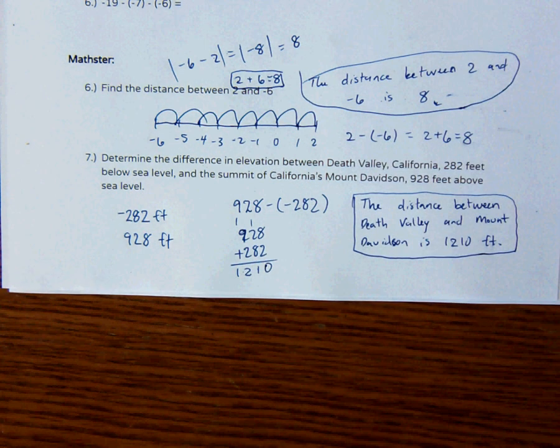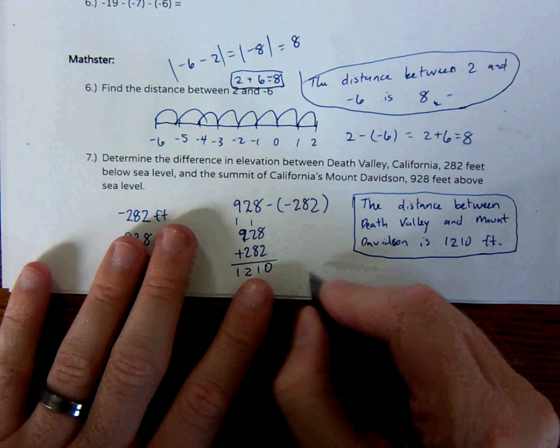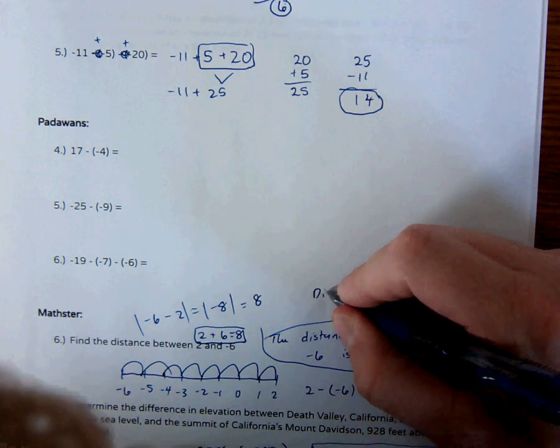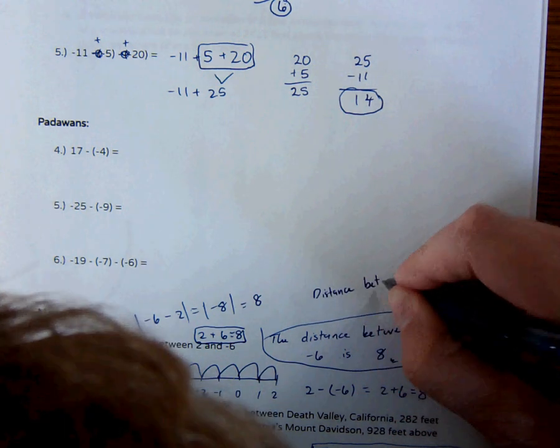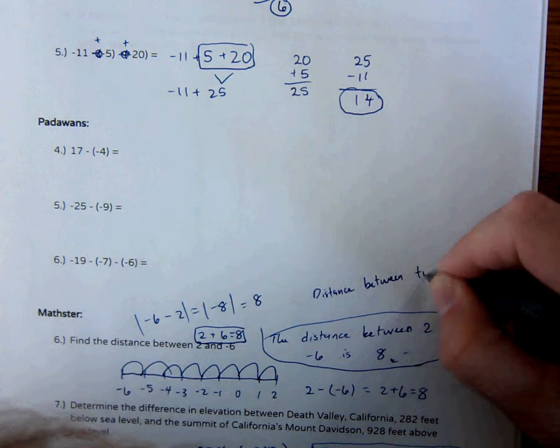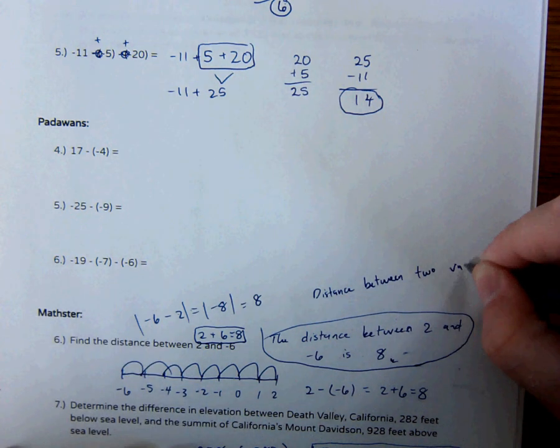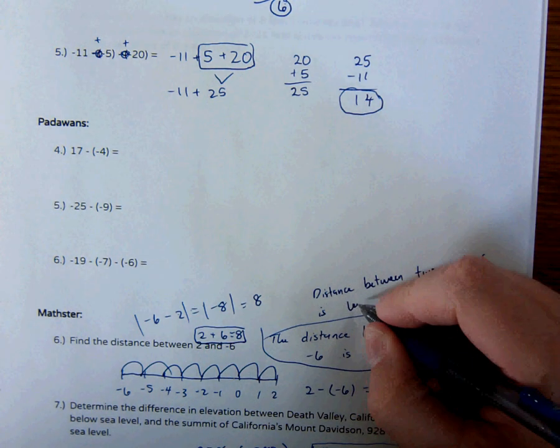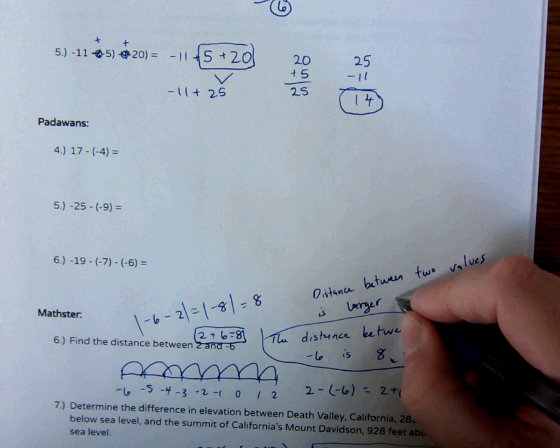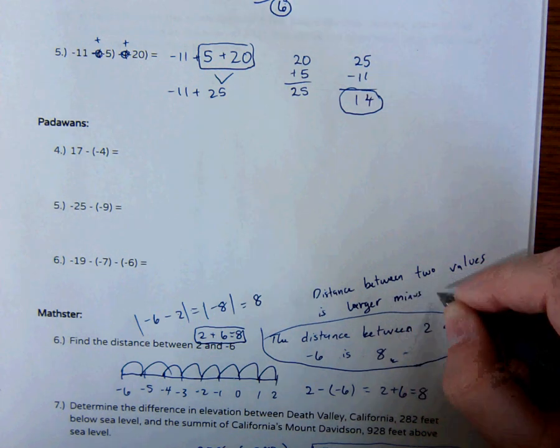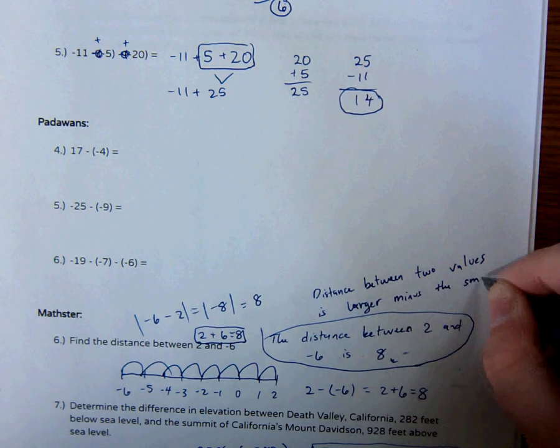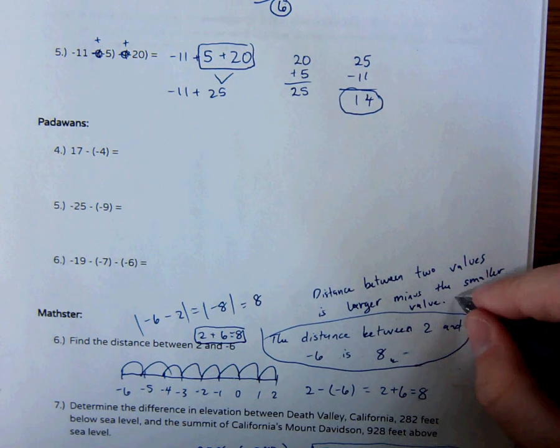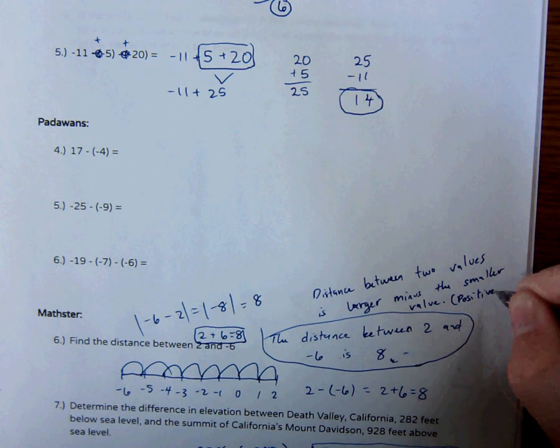So again, if we want to think about this, distance between two values is the larger minus the smaller value. And it always has to be positive.